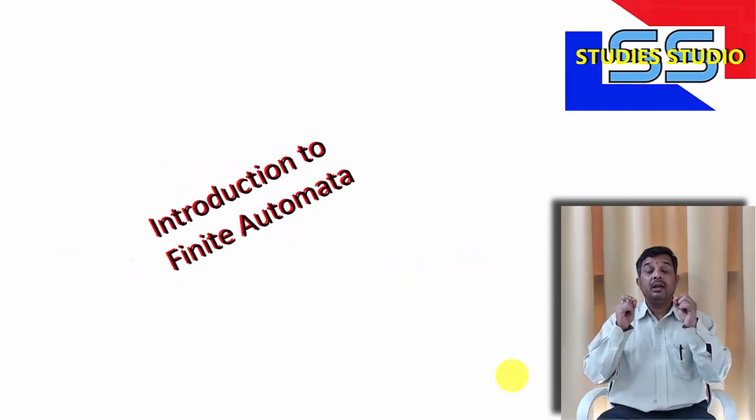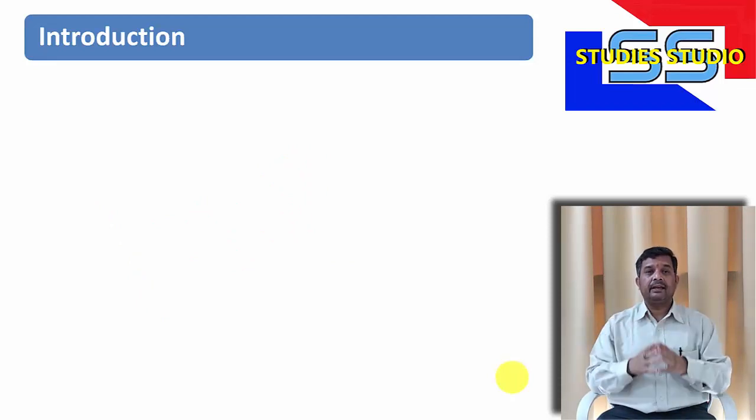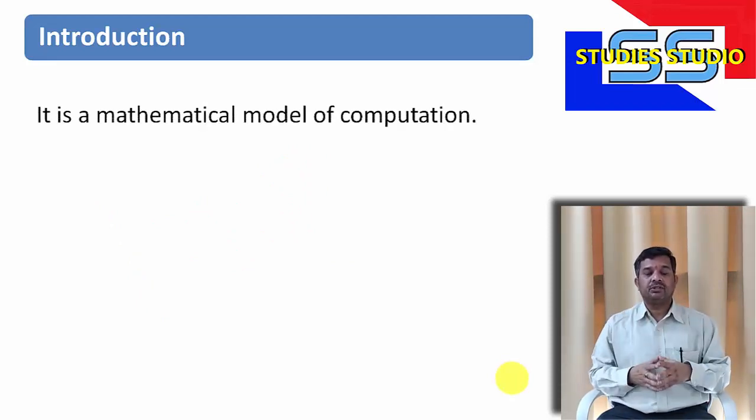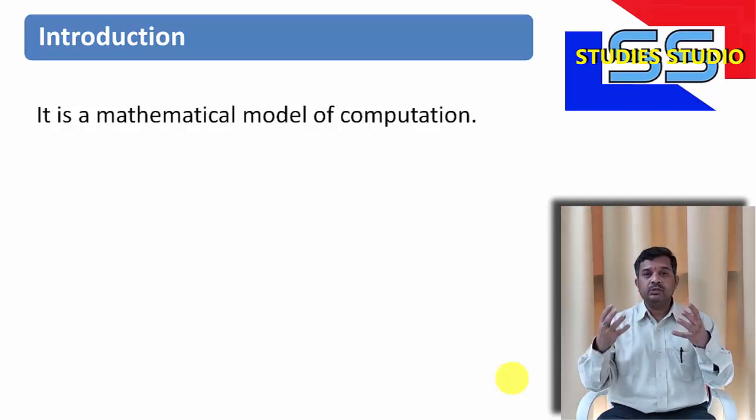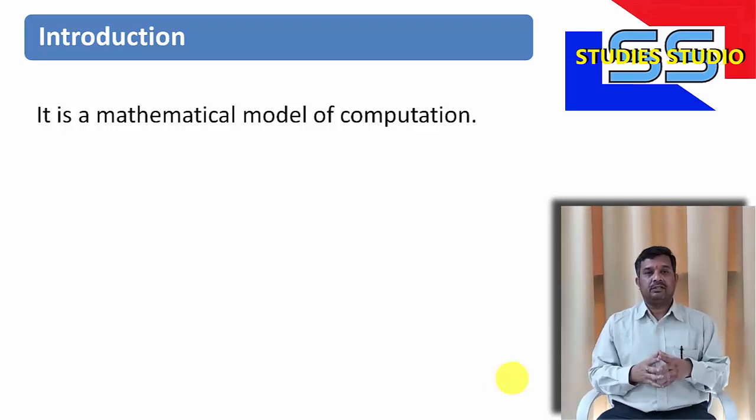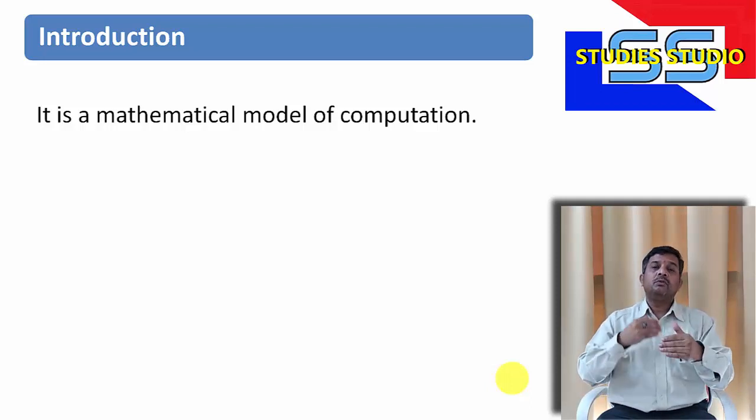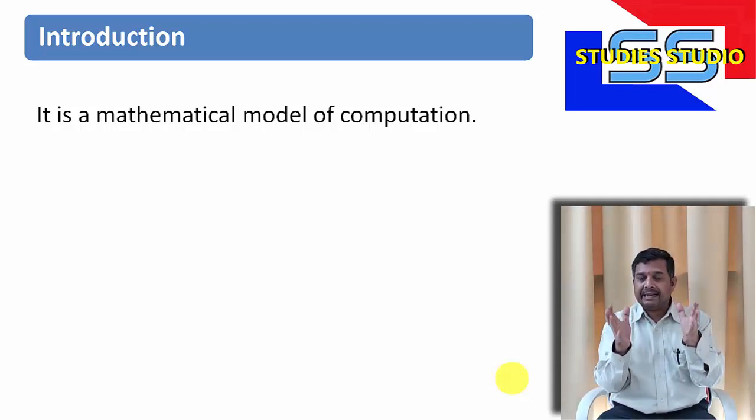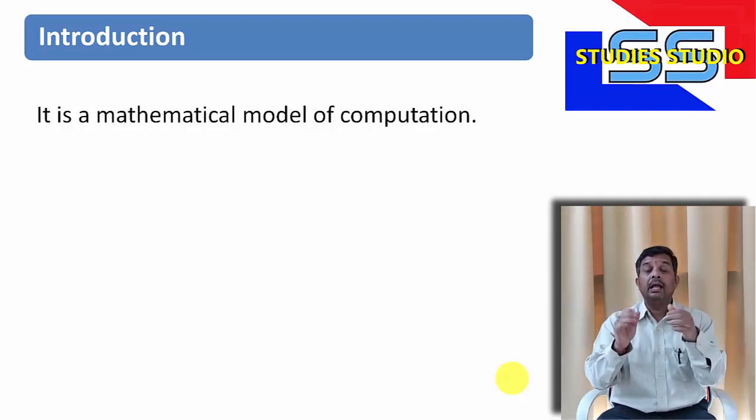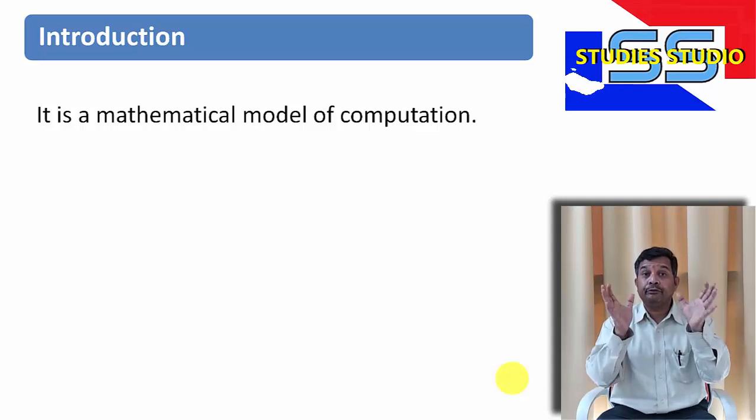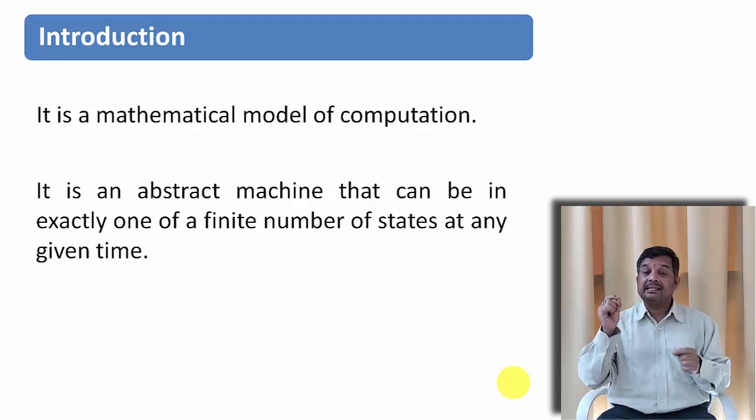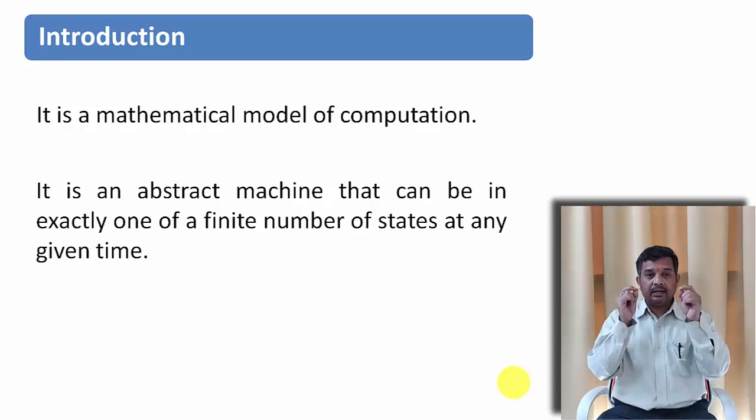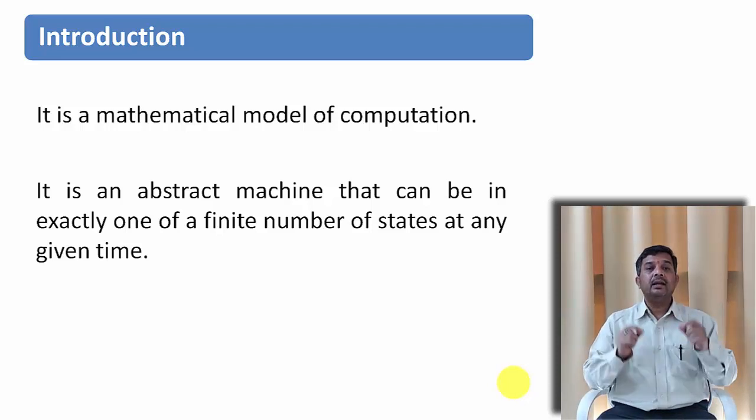This topic, Theory of Computation—you open any book, you will find this first line: it is a mathematical model for computation. When we say Theory of Computation, it means some kind of computation is there. It means we'll use an electronic device that will compute. First, let's talk about a computer. So when you are talking about a computer, you are not creating a computer; rather, you are creating a mathematical model of how the computer is going to compute for you. As a definition, people generally say it is an abstract machine that can be in exactly one of a finite number of states at any given time. What is the meaning of that? So here you see there are two basic words: abstract and machine.